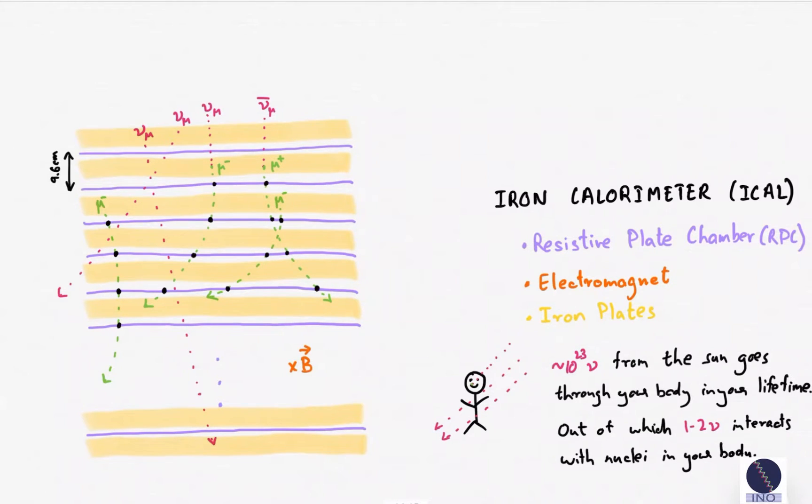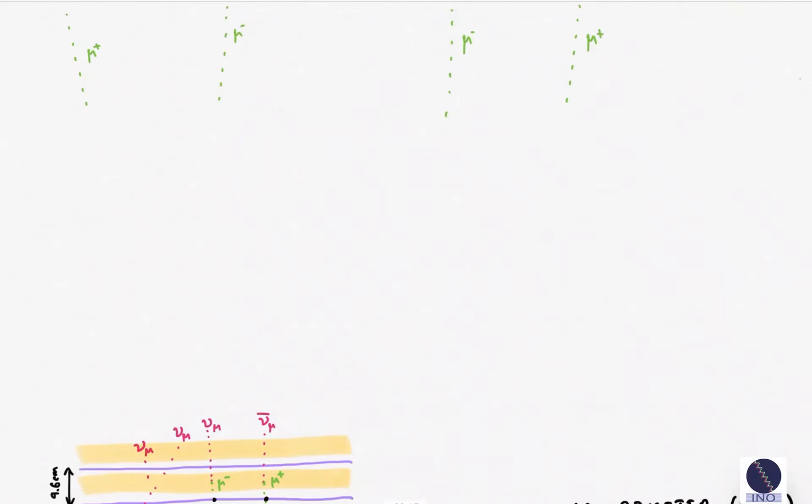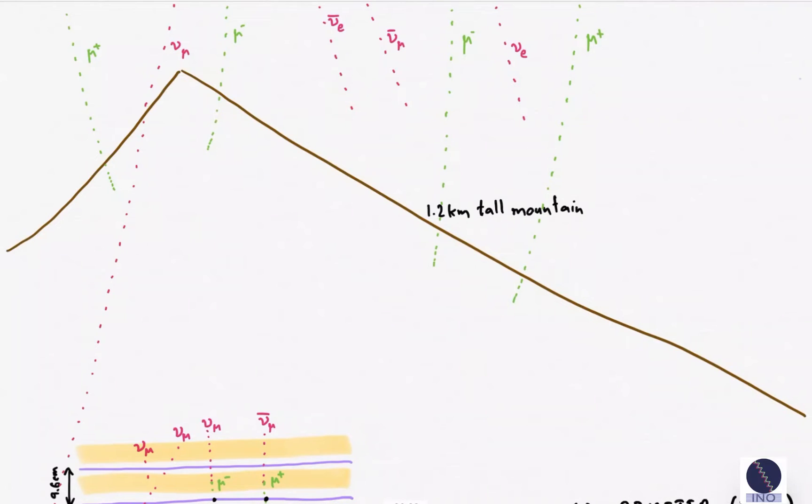ICAL detector will click even if there are muons coming from cosmic rays. The surface of our Earth is always bombarded by cosmic muons. To escape from this background, ICAL is to be constructed under the peak of a 1.2 km tall mountain. The muons will be slowed down and decayed in the rock cover, but the neutrinos will reach the ICAL.